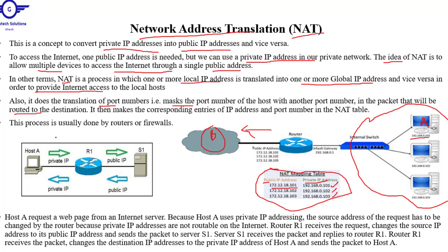There's a scenario here using this diagram. Let's consider: Host A wants to access Server 1 over the internet. The router will translate the private IP address into a public IP address to allow Host A to access Server 1, then translate the public IP address back into a private IP address for the return traffic. Host A requests a webpage from an internet server. Because Host A uses private IP addressing, the source address of the request has to be changed by the router, since private IP addresses are not routable on the internet — only public IP addresses are routable over the internet.